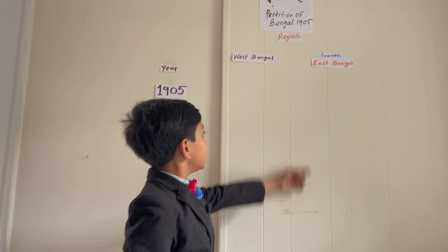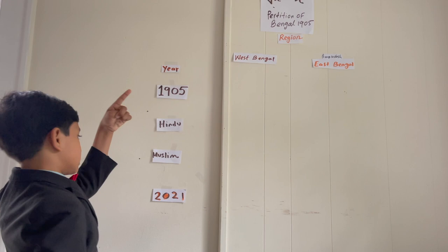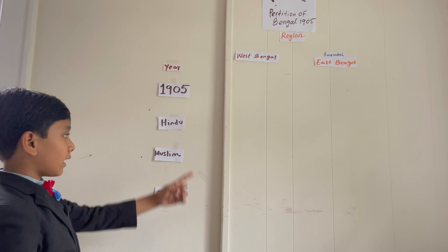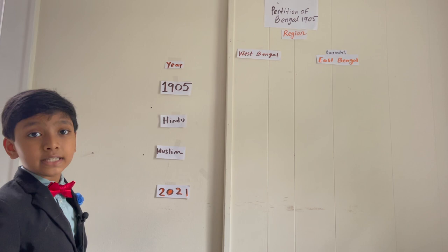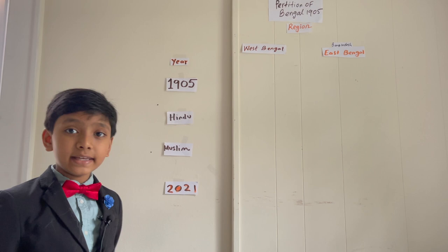First we're going to be looking at West Bengal's Hindu and Muslim population in 1905, then West Bengal's Hindu and Muslim population present day in 2021, and then we'll do the same thing for East Bengal. So let's get started with the first question: what was the population of West Bengal in 1905?